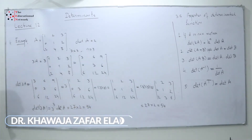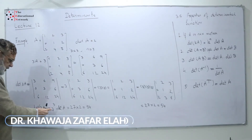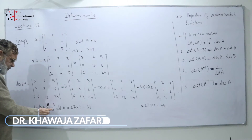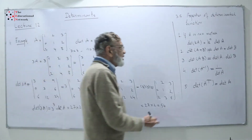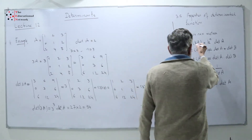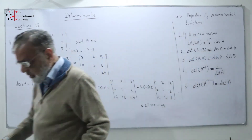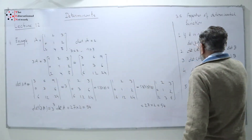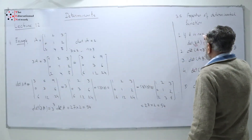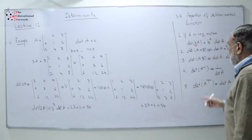Whatever scalar you use — 4, 5, 6, 7 — the result will be k to the power 3 times determinant of A. In this case my k was equal to 3 and my n was also equal to 3, since this is a 3 by 3 matrix. That is the idea: determinant of kA equals k to the power n times determinant of A.